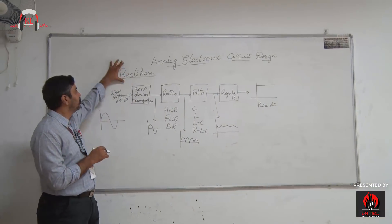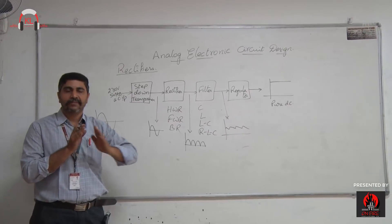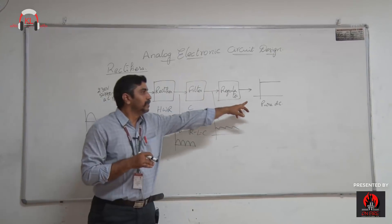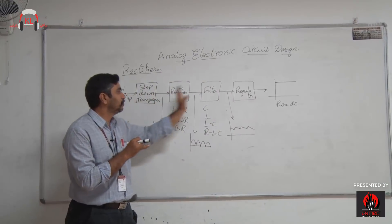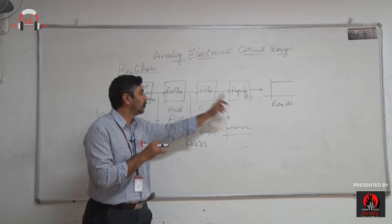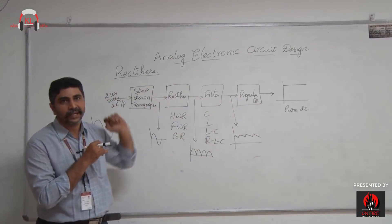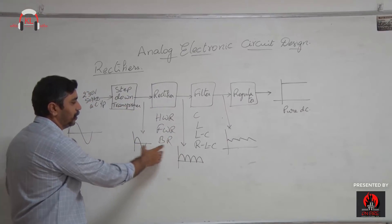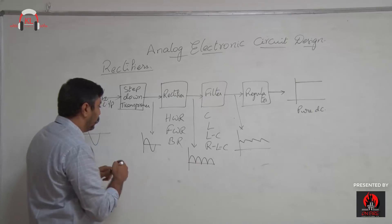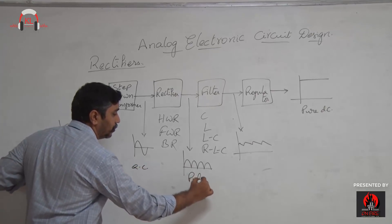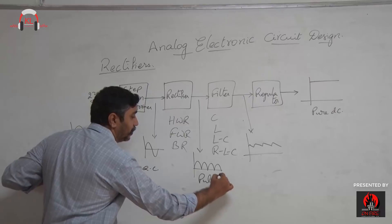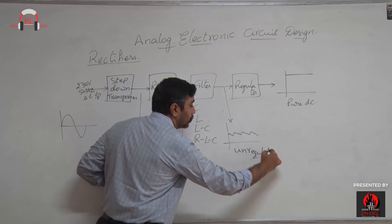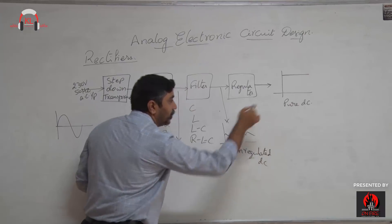Another application is rectifiers. A rectifier is a device which converts a given AC signal into DC. The block diagram goes: AC signal → transformer → rectifier → filter → voltage regulator → pure DC. The rectifier converts AC to pulsating DC.